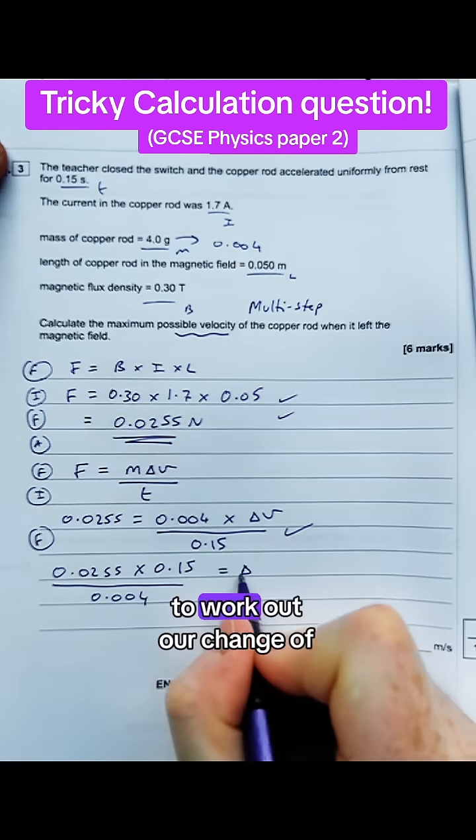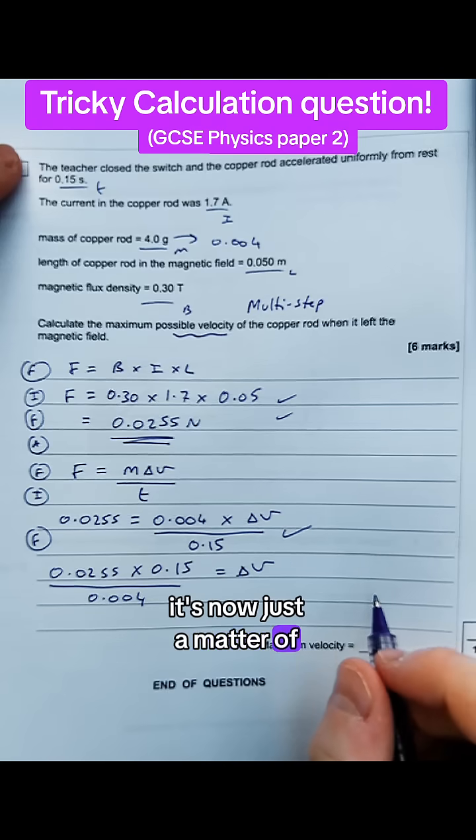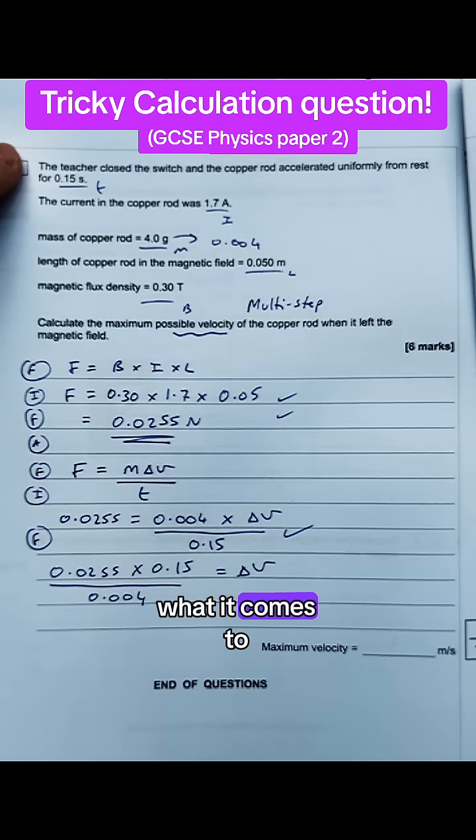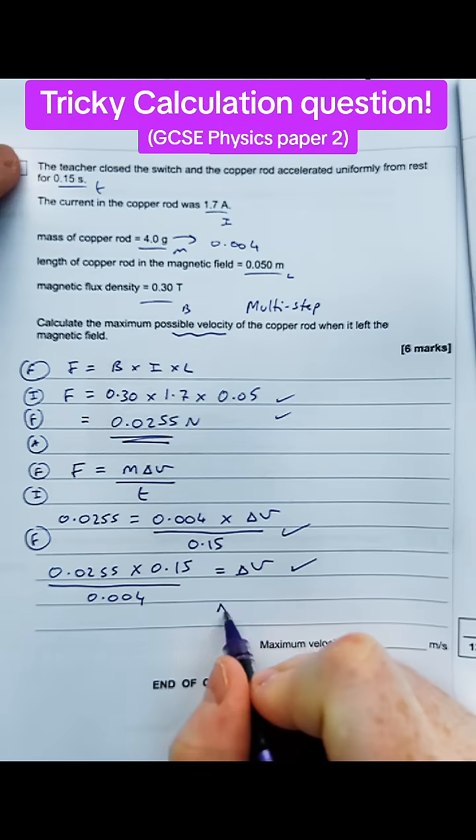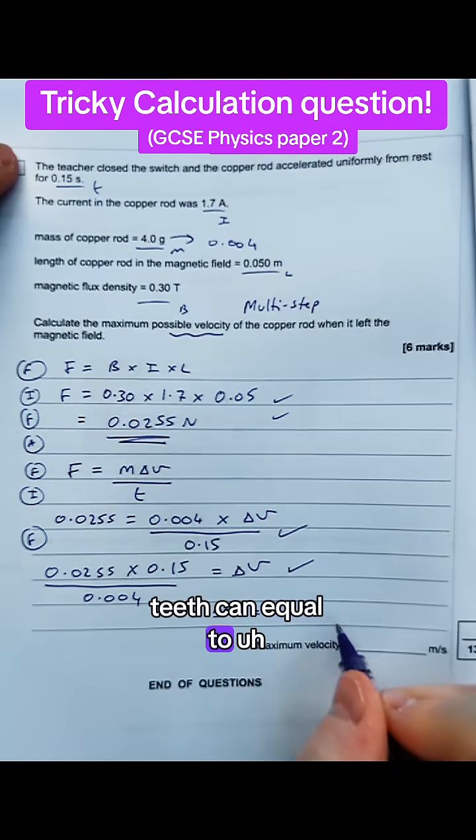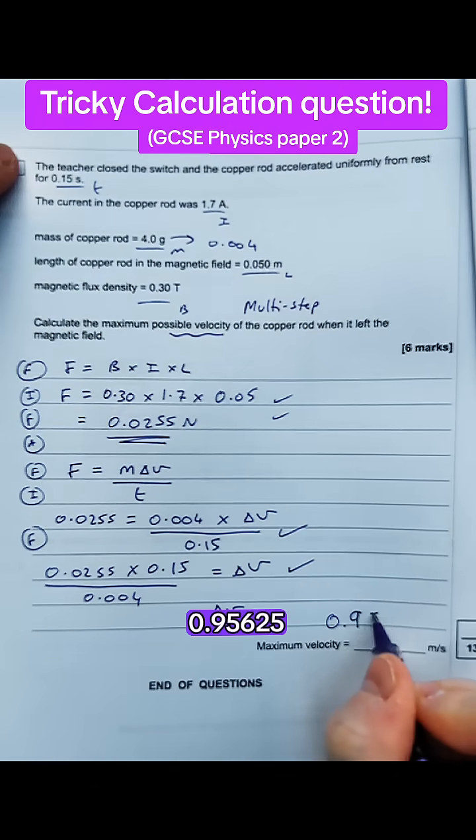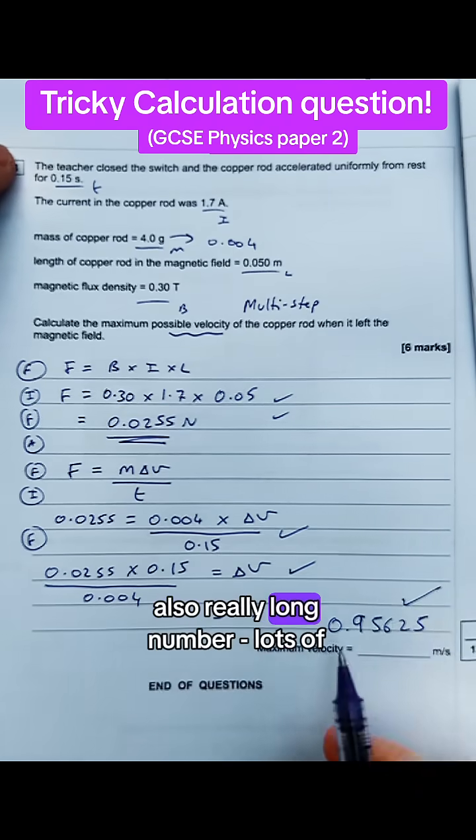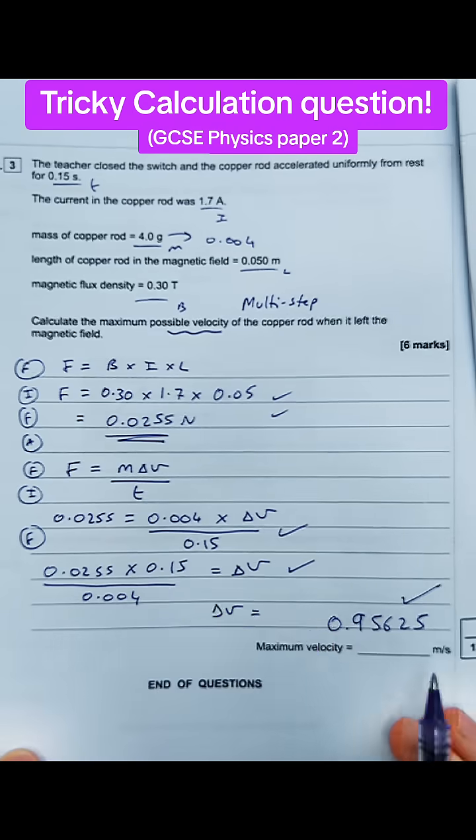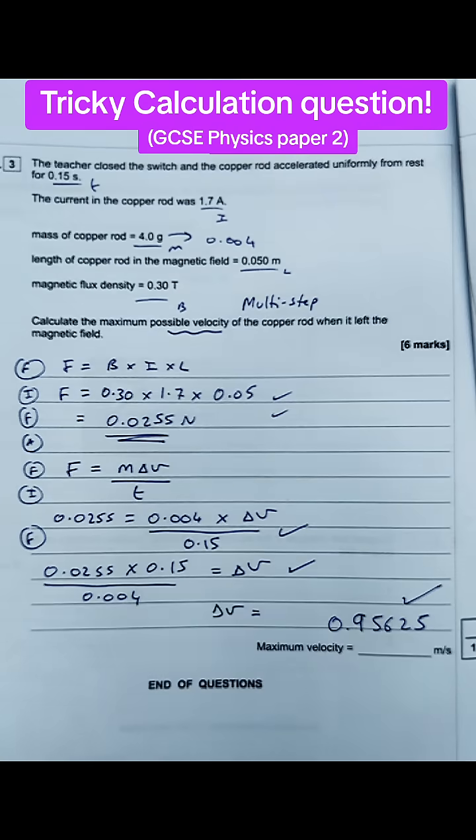So we now have an expression to work out our change of velocity. It's now just a matter of plugging numbers in to see what it comes to, and we do also get the marks for doing that final stage. And then change of velocity is going to be equal to 0.95625, which is a really big weird number, also a really long number, lots of decimal places. Doesn't mean it's wrong, just follow the method and you'll be fine.